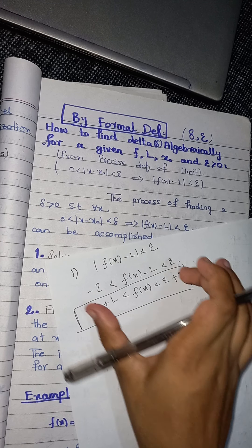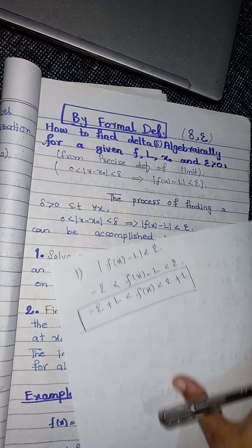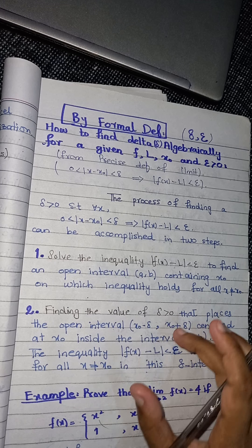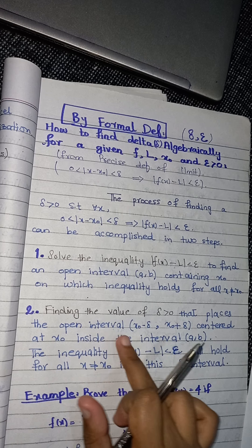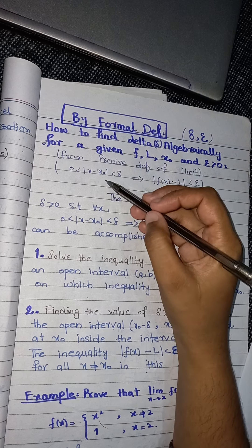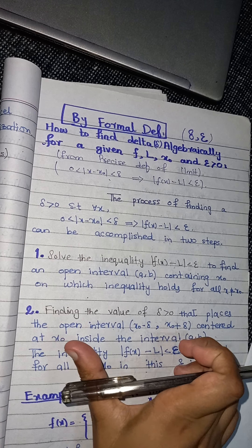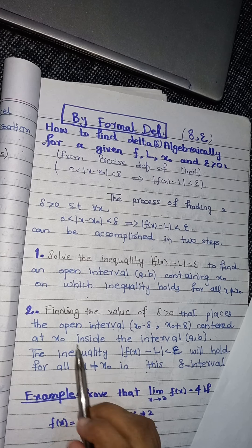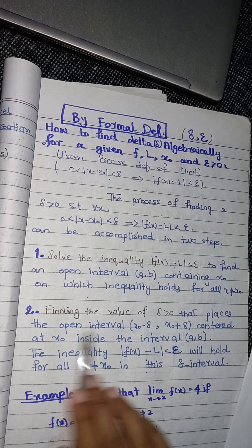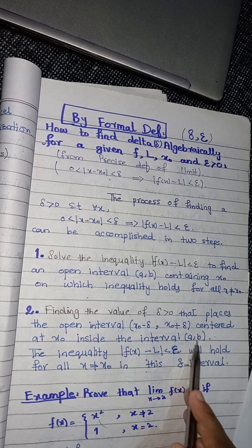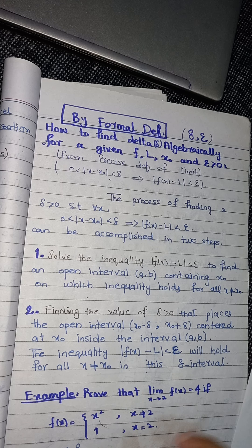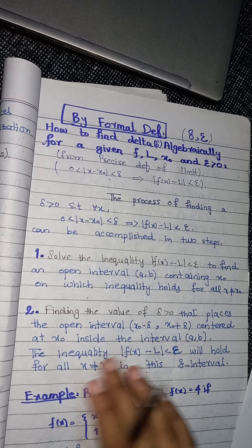When you solve this inequality you get an interval containing x naught on which the inequality holds. The second step is to find the value of delta greater than zero that places the open interval centered at x naught inside the interval (a, b). The inequality will then hold for all x not equal to x naught in this delta interval.